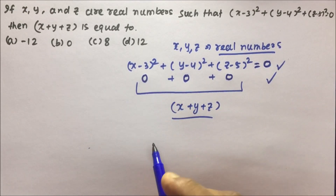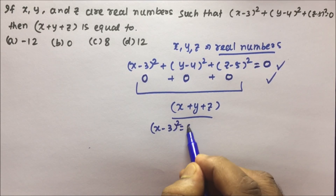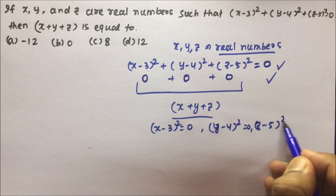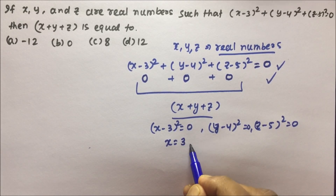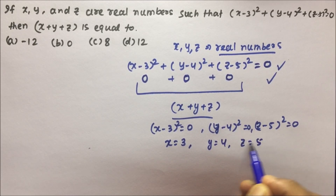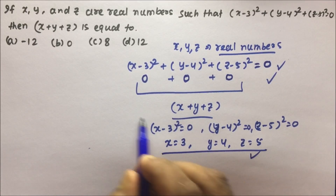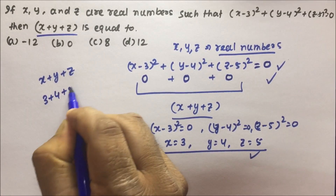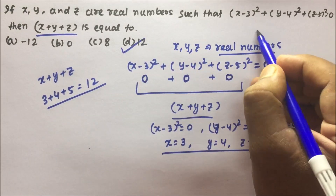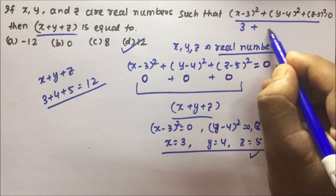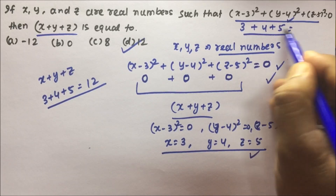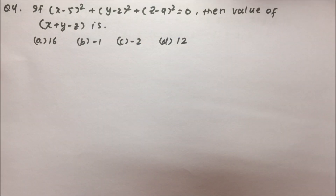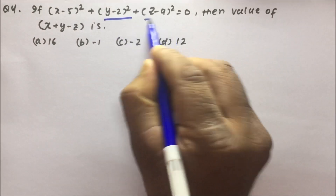If the total is 0, each particular term must be 0. So (x - 3)² = 0 means x = 3; (y - 4)² = 0 means y = 4; and (z - 5)² = 0 means z = 5. They are asking for x + y + z, which is 3 + 4 + 5 = 12. Option D is the correct answer.